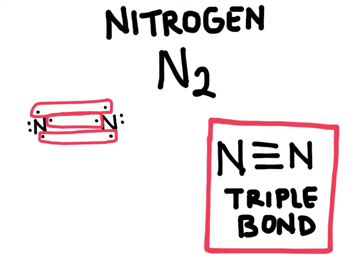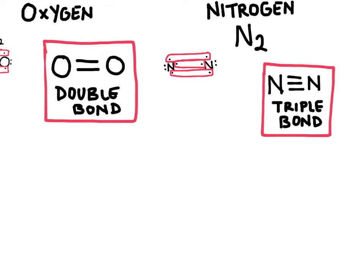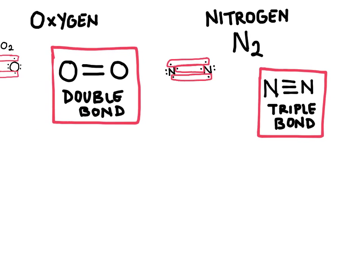Now the maximum amount of bonds to have is really a triple bond, you don't have a quadruple bond ever happening. Now a triple bond is actually a lot stronger than a double bond, which is even stronger than a single bond.